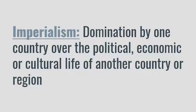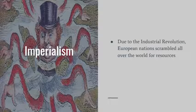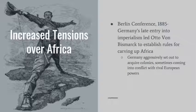The third MAIN cause is imperialism — the domination by one country over the political, economic, or cultural life of another country or region. Due to the Industrial Revolution, European nations were scrambling for resources worldwide, leading to more competition and the possibility of warfare. Because of Germany's late entry into imperialism, Otto von Bismarck called for the Berlin Conference, which established rules for carving up Africa. Germany aggressively acquired colonies, sometimes conflicting with rival powers, and the conference led to increased tensions over who got what parts of Africa.